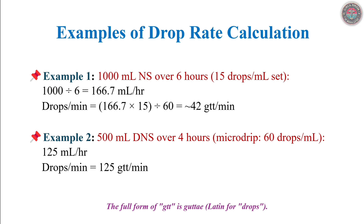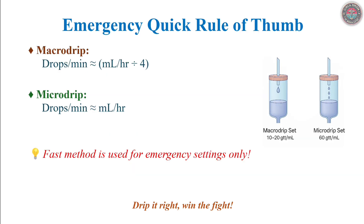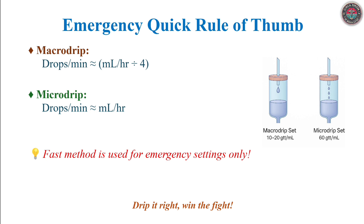In high-stakes emergencies, rapid calculations are essential. For macro drip sets, divide the hourly rate in milliliters by 4 to estimate drops per minute. With micro drip sets, the hourly rate equals the drops per minute. For example, 100 ml per hour becomes 25 drops per minute for macro drip or 100 drops per minute for micro drip. This rule is a temporary measure — always verify with precise calculations when time permits. These rough estimates are life-saving in the first moments but should be corrected afterward.